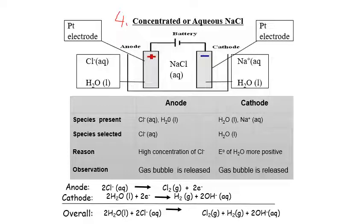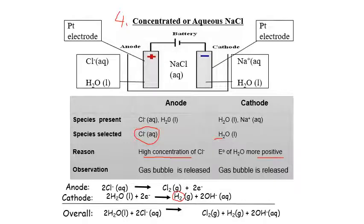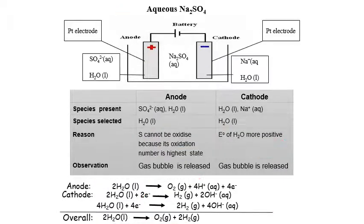Case 4: Concentrated aqueous sodium chloride. The species present are the same, but at the anode, Cl⁻ is now chosen due to its high concentration. At the cathode, water is still chosen because the electrode potential for H₂O is more positive. The cathode still produces hydrogen gas. At the anode, Cl⁻ undergoes oxidation to form Cl₂ gas. Both half-equations involve 2 electrons, so you combine them directly to get the overall equation.